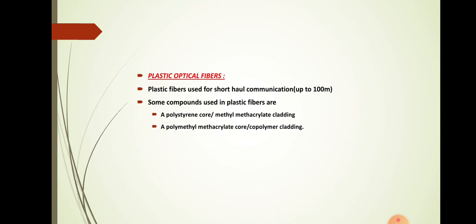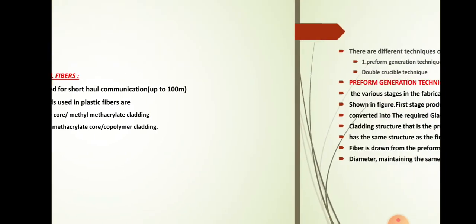Plastic optical fibers are used for short-haul communication, where the distance is in the range of 100 meters. Compounds used in plastic fibers include a polystyrene core with methyl methacrylate cladding, and another set is a polymethyl methacrylate core with copolymer cladding. In plastic fibers, attenuation and scattering losses are high, so plastic fiber is not preferred for long-haul communication.